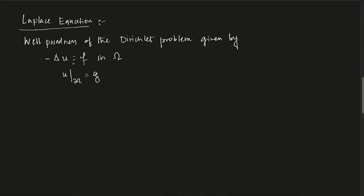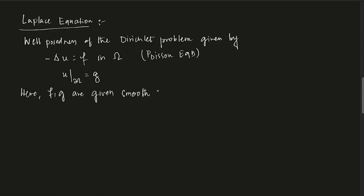This is a Poisson problem — it is a Poisson equation. Laplace of u equals 0 is called the Laplace equation, named after the French mathematician Poisson. If f equals 0, that is the Laplace equation; if you have an arbitrary f, that is the Poisson equation. When you restrict u to the boundary of omega, that is a given function g. Here, f and g are given smooth functions.